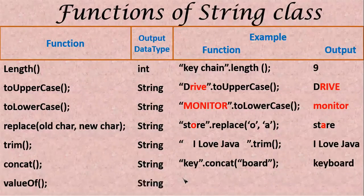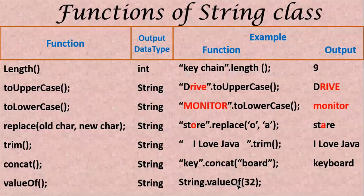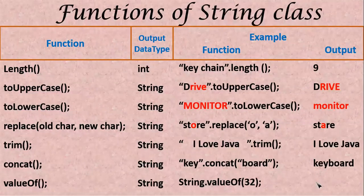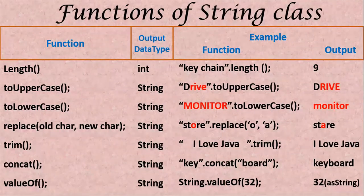Then valueOf() — this is also going to be String type. For example, String dot valueOf(32) — note that V is capital, 'alue' in small, O is capital, F is in small letter. The integer value is going to be converted into a String value, just 32 as the object. There are many more string functions in this class but we will see only this much and continue in the next class.